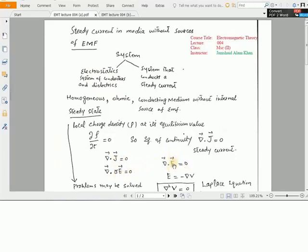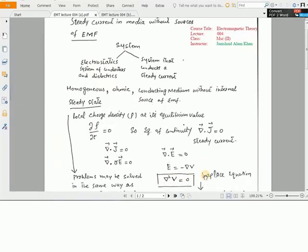Here we can replace electric field by using this equation. Electric field can be defined as negative of potential gradient. So using this equation, del square of V is equal to zero. This is known as the Laplace equation.